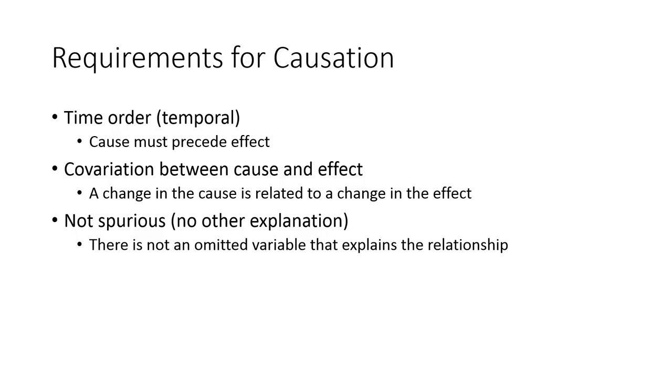The third requirement is that this relationship is not spurious. In other words, there is no other explanation for the relationship between variables A and B other than the causal relationship of A causing B. In research terms, this would be to say that there is no omitted variable that explains the relationship. So as we thought about this silly example of car price and academic achievement, we could see in that example that there were very other reliable explanations such as that of parental education or parental income.